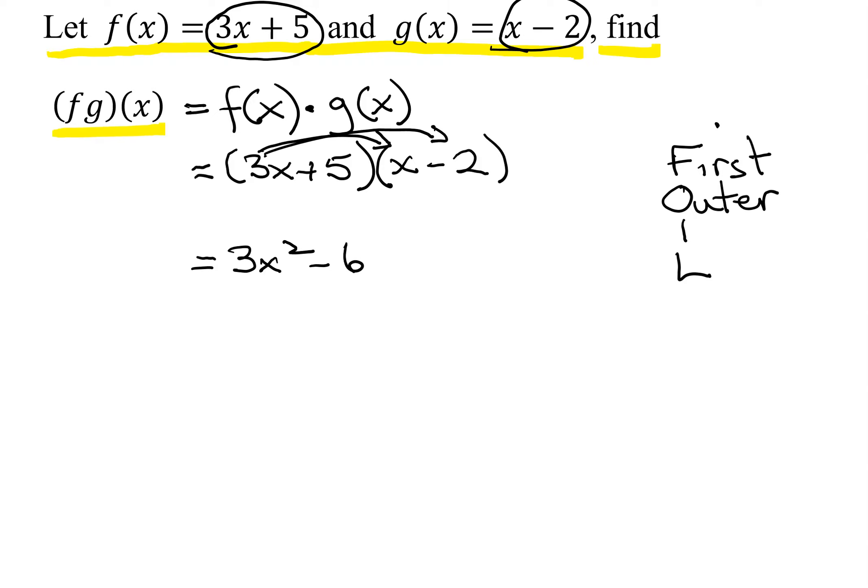I stands for inner, 5 times x is 5x, and L stands for last, so I have 5 times negative 2 is negative 10.